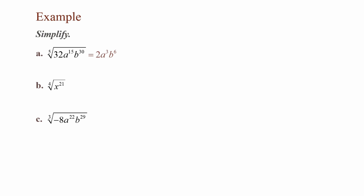For Part B, I have the 4th root of x to the 21st power. 21 is not a multiple of 4. However, if I rewrite x to the 21st as x to the 20th times x to the 1st, I will have a perfect 4th root. The 4th root of x to the 20th: 20 divided by 4 is 5, so I have x to the 5th power times the 4th root of x.